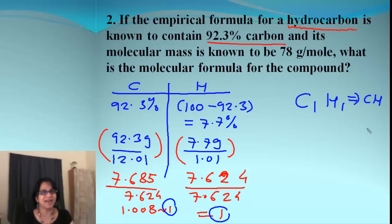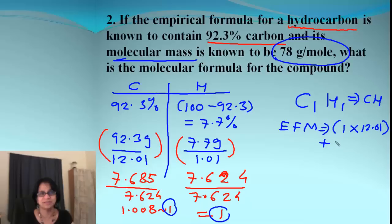How do we find the molecular formula? The molecular mass is given to you. Using CH, you can find the empirical formula mass. That will be 1 carbon and 1 hydrogen. When we add that, we get 13.02.